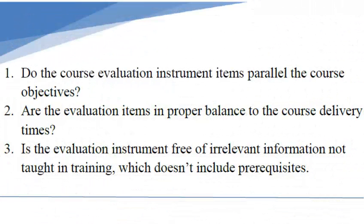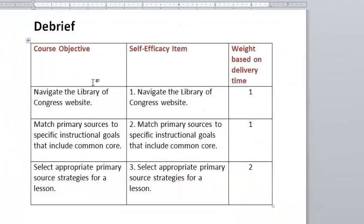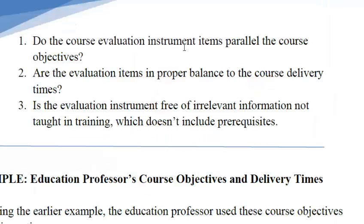Let's debrief on what was taking place to determine whether the self-efficacy instrument is content valid. Recall from page 7 there are three criteria. The first asks if the instrument items parallel the course objectives. Putting it in a table, we see each course objective listed next to the corresponding self-efficacy item, and we do see that there is a parallel — so we comply with that criteria.